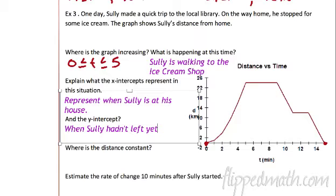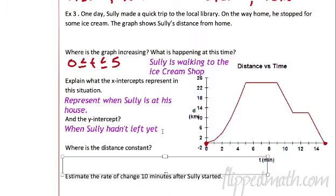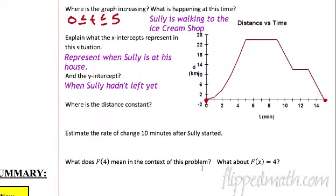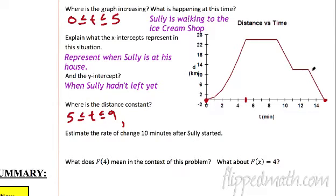Where is the distance constant? From minutes — constant right here at the top, and it's also constant right here. We're going to say it is constant from about minute five all the way to minute nine, so from five to nine. And also from 11 to about 13. So we're writing it with our compound inequality.